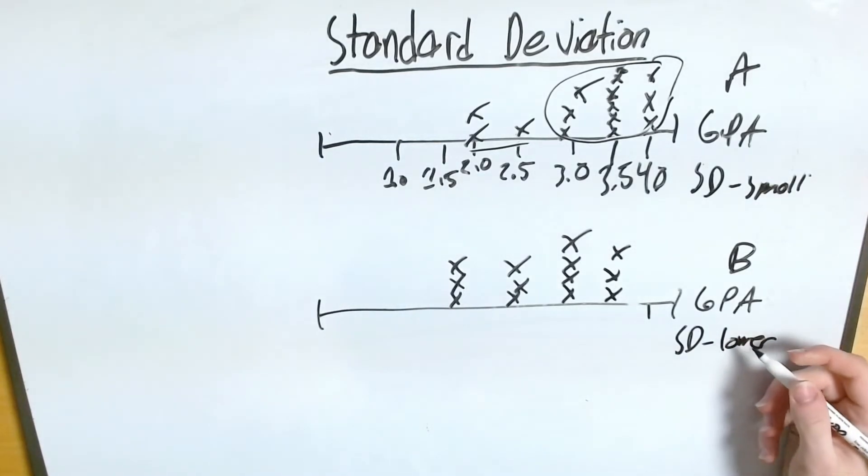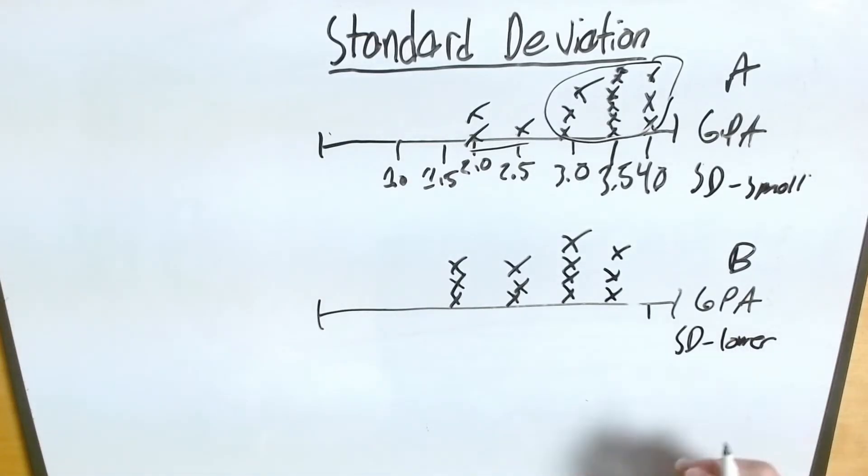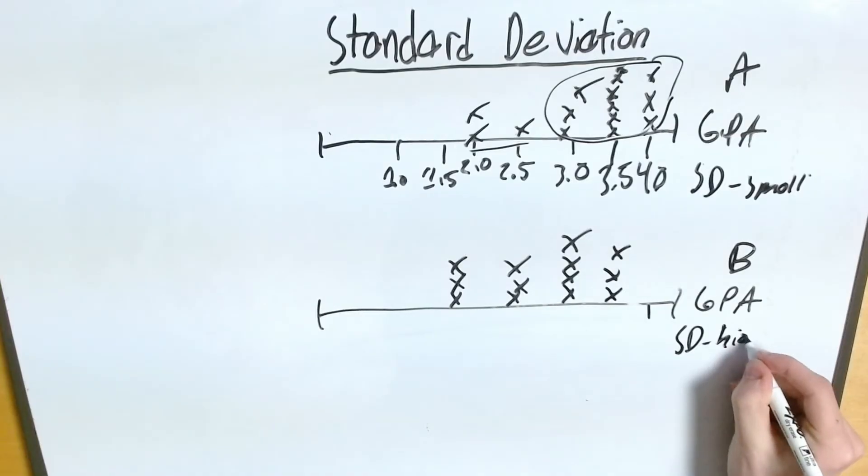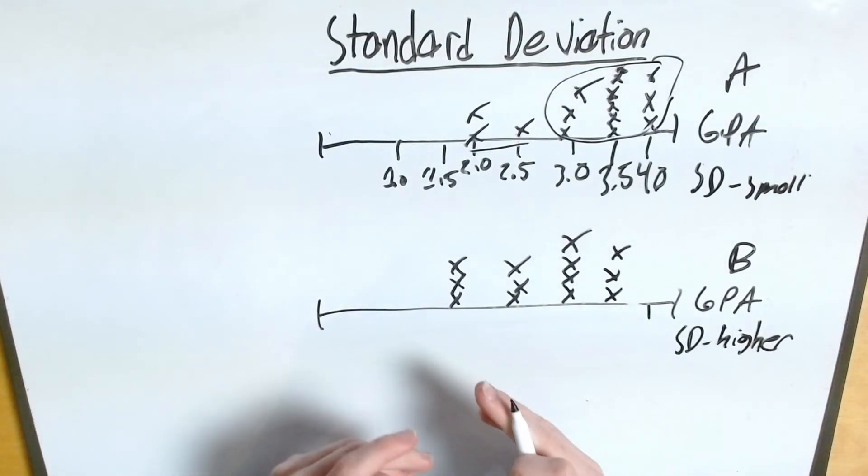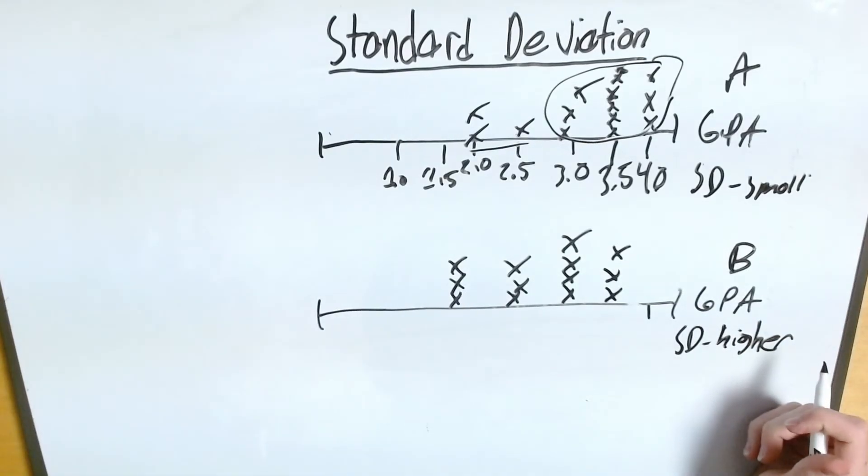So, if I was asked which standard deviation is greater, I would say, without question, it's B. Because it's more spread apart.